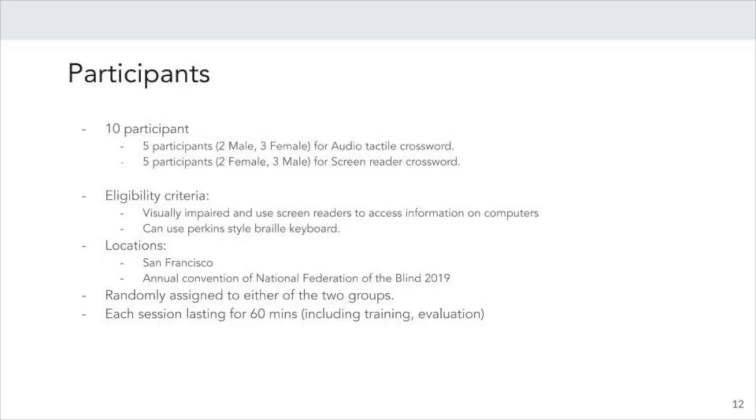We worked with 10 participants for this user study, of which 5 were assigned to the AT Crossword and the remaining 5 to the SR Crossword. The eligibility criteria for this study required that our participants are legally blind and use screen readers to access information on computers. We also required that they were familiar with using a Perkins-style Braille keyboard. Participants were recruited in San Francisco and at the NFB's 2019 annual convention. They were randomly assigned to either of the groups and each study session lasted for about 60 minutes.